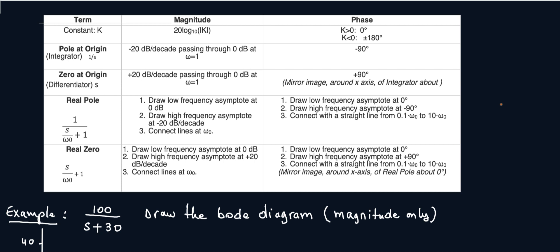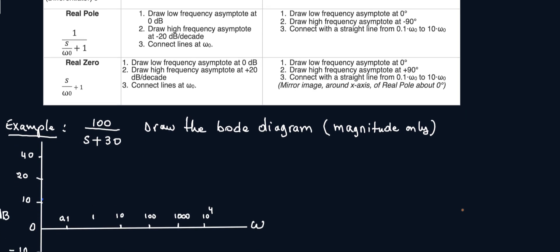First thing whenever you're given a transfer function, step number one is to simplify the function to unity. What I mean by that is you're going to make sure that you have ones on top and bottom, the numerator and your denominator. So I'm going to simplify: 100 divided by (s + 30). Taking out 100 on top and taking out 30 at the bottom, simplifying it's s/30 + 1. You're going to simplify the lowest order to unity.